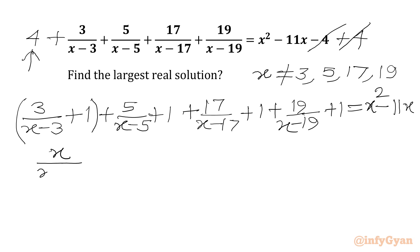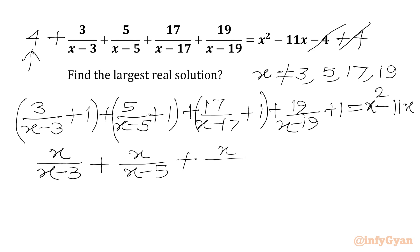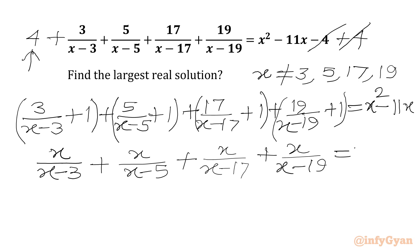We will write only x over (x-3), plus x over (x-5), plus x over (x-17), and from the last bracket x over (x-19), equal to x times (x-11). Now x = 0 is clearly one root of the equation. So we can remove x from both sides and write x = 0 as our first real solution.